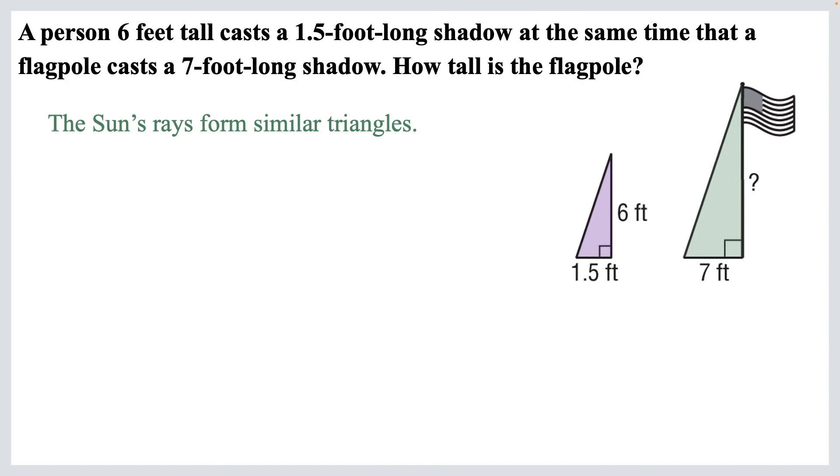So if we use X for the height of the flag pole, then we can set up our proportion. Cross multiply. 1.5X equals 42. Divide both sides by 1.5, and we get X equals 28. So we know the flag pole is 28 feet tall.